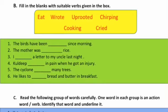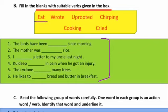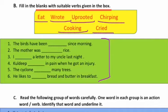Now the B part is: fill in the blanks with suitable verbs given in the box. Ab pehle inke meanings samajh lete hain aur uske baad inko neeche wale sentences mein correctly use karna hai. Pehli verb hai 'eat' — khana; 'wrote' — likha ya likhna; 'uprooted' — kisi cheez ko ukhaad dena, jaise toofan mein ped zameen se ukhar jaate hain, roots se ukhaad dena; 'chirping' — chah chahana; 'cooking' — khana banana; aur 'cried' — rona ya chillaana.